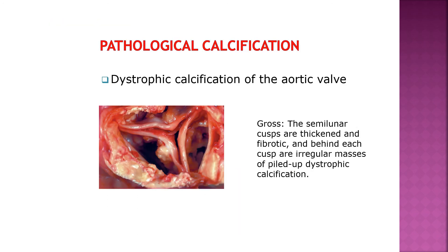This picture shows dystrophic calcification of the aortic valve. The semilunar cusps are thickened, and behind each cusp there are irregular masses of dystrophic calcification.